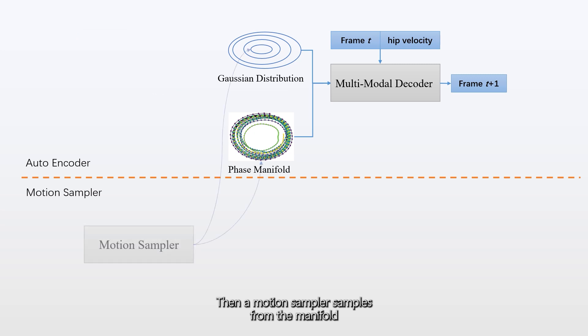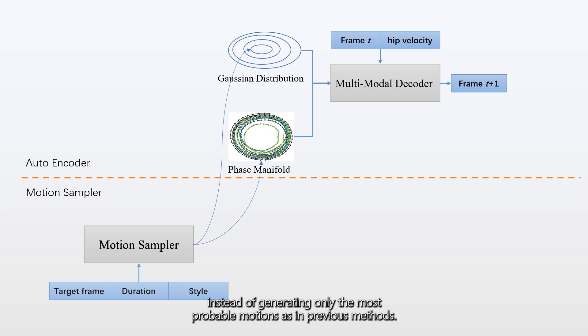Then a motion sampler samples from the manifold with specified target frames, time duration and style, instead of generating only the most probable motions as in previous methods.